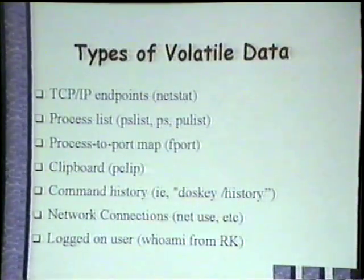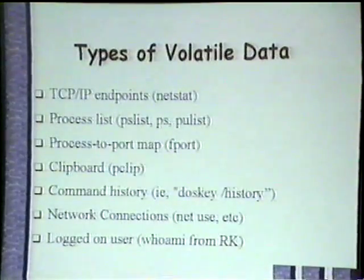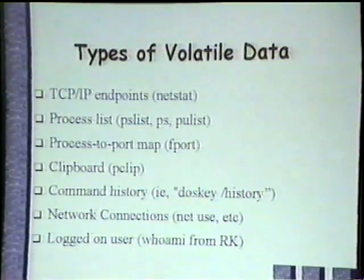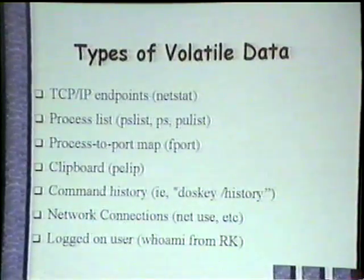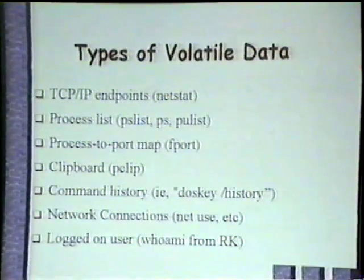Going back to what I said earlier about Unix admins mapping the box and then going out to a website to look up default Trojan ports — what good is that going to do you? Clipboard contents are also interesting volatile data. I use PGP a lot, and sometimes I'll copy content to the clipboard and decrypt it — there's a lot of interesting information you can get from the clipboard. DOSKey history is very interesting — if anybody uses the command line at all, the DOSKey history is an excellent place to get information and find out what commands were being typed. Network connections, net use, and logged-on users: 'WhoAmI' from the resource kit gives a lot of good information.